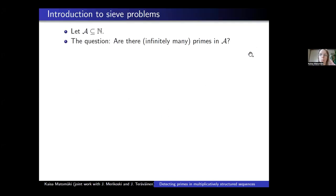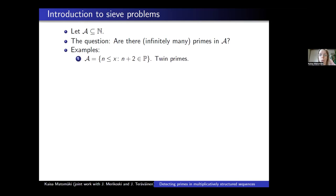I'll start with an introduction to sieve problems. The basic question in a sieve problem is that we have some sequence A of natural numbers and we want to know if there are primes in A, or if there are many primes in A. We can take the set A to be anything. For example, if we take A to be the set of integers up to x such that n plus 2 is a prime, then we are asking if there are twin primes — if there are n such that both n and n plus 2 are prime.